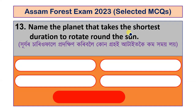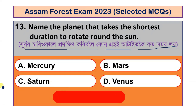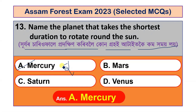Question number 13: Name the planet that takes the shortest time to rotate around the sun. Options are Mercury, Mars, Saturn and Venus. The correct answer is Mercury, because Mercury takes the least time to complete its orbit around the sun.